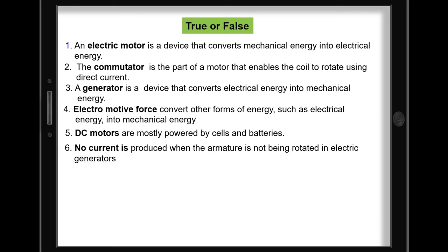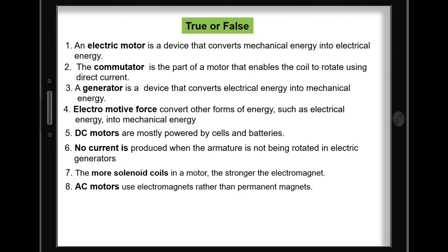6. No current is produced when the armature is not being rotated in electric generators. 7. The more solenoid coils in a motor, the stronger the electromagnet. 8. AC motors use electromagnets rather than permanent magnets.